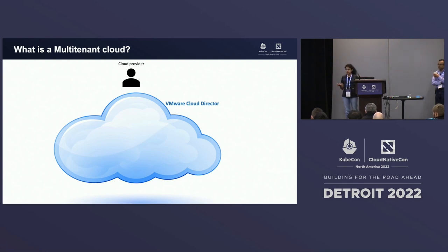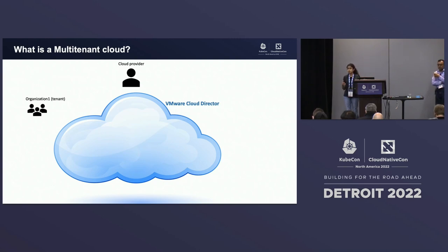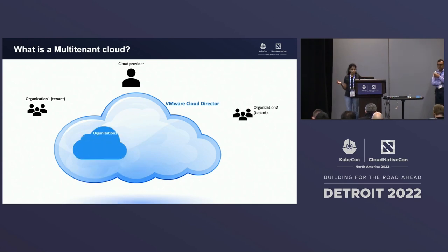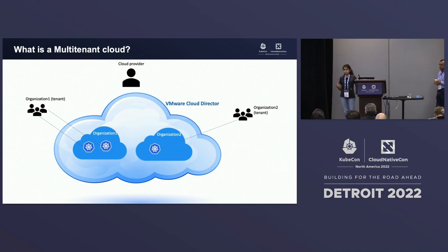Who are the tenants here? Tenants could be an individual end user, but in our particular case, our cloud platform — this multi-tenant cloud platform — is VMware Cloud Director. The tenant is an organization: an enterprise-level company with a group of users. There can be multiple organizations within this cloud platform, and these users can request Kubernetes clusters. This is the solution we have built — a Kubernetes as a service engine on top of a multi-tenant cloud platform with the underlying technology of Cluster API.